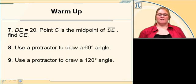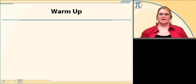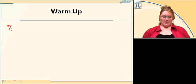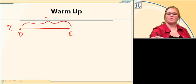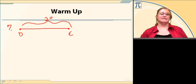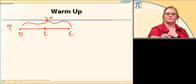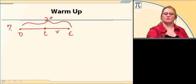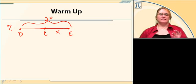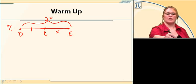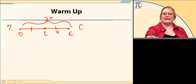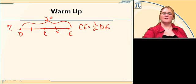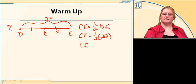Seven, eight, and nine. Seven, we're going to be looking at midpoint, and eight and nine, we're going to look at doing angles. On number seven, we have DE. So I'm going to draw it — DE — and it says that DE is 20, so I'm going to label it 20. It says that C is the midpoint of DE, so that means C is right smack dab in the middle. It wants us to find CE. Now if C is the midpoint, that means it cuts segment DE in half, so DC and CE are equal. CE is half of DE, and I can substitute what DE is: CE equals half of 20, so CE equals 10.